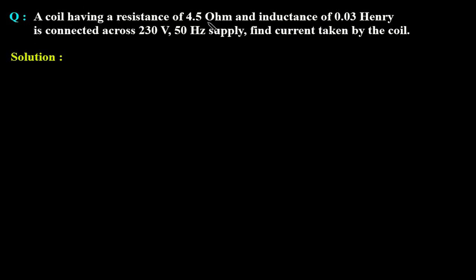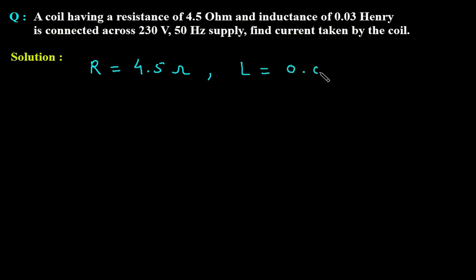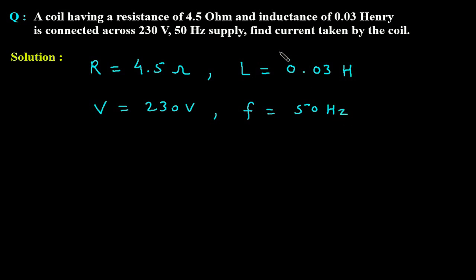A coil having a resistance of 4.5 Ohm and inductance of 0.03 Henry is connected across a 230 volt, 50 hertz supply. The given values are: R = 4.5 Ohm, L = 0.03 Henry, V = 230 volt, and frequency f = 50 hertz. We need to find the current I taken by the coil.